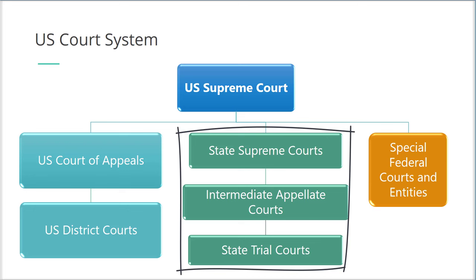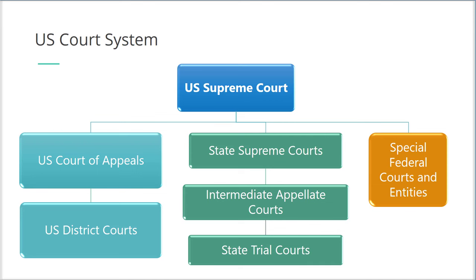State courts have jurisdiction over disputes with some connection to a U.S. state, and they handle the vast majority of civil and criminal cases in the United States. State courts generally apply their own state law to decide cases, although where applicable they also apply federal law. State courts are organized in accordance with their state's constitution and statutes. Generally, there are trial courts at the lowest level, where typically a single judge presides over criminal or civil actions.